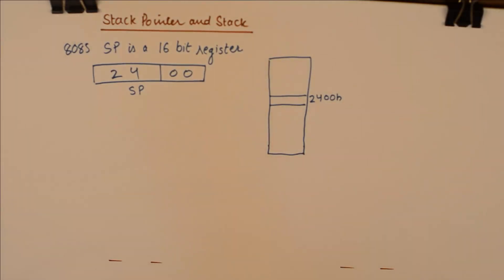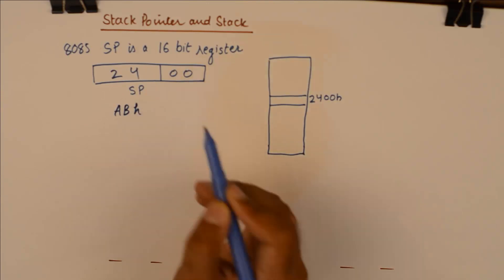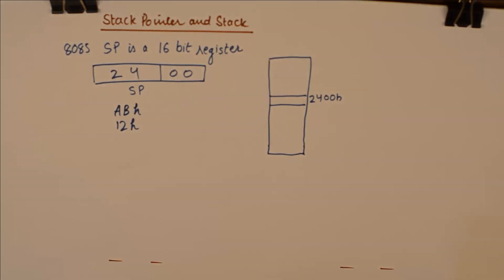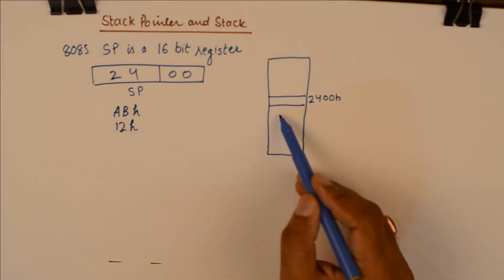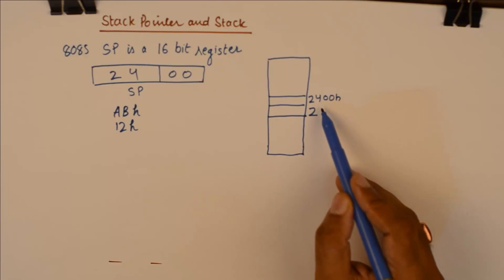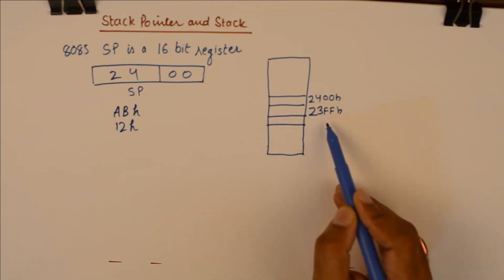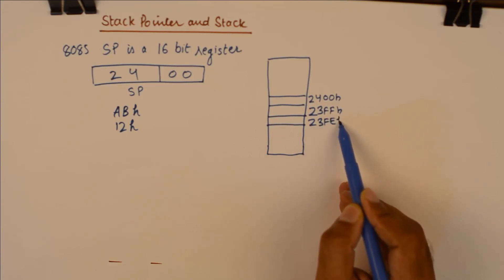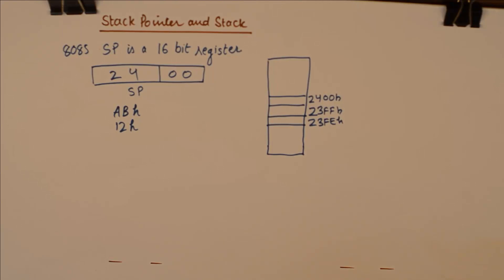So if I have two bits that I wish to store, for example I want to store ABH data and 12H data into stack, what the microprocessor has an option is it will store it in 23FFH and 23FEH which are the immediate lower addresses which are being pointed by the stack pointer. And now when once I store these two bytes on the stack the stack pointer will now point to 23FEH because it points to the current top location of the stack. So that is how it works.